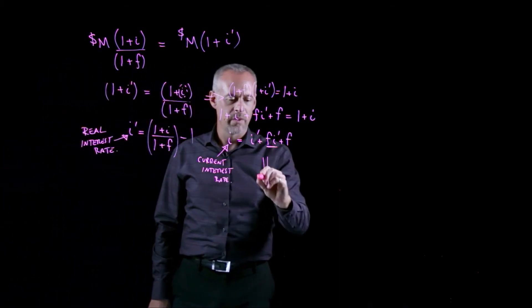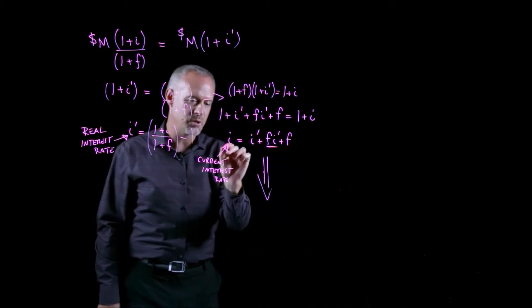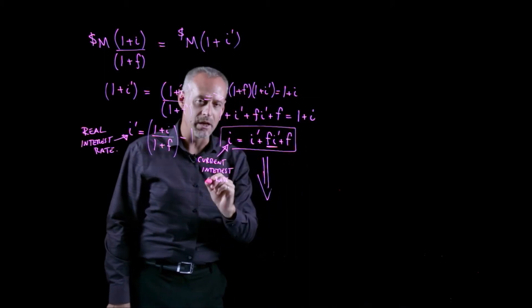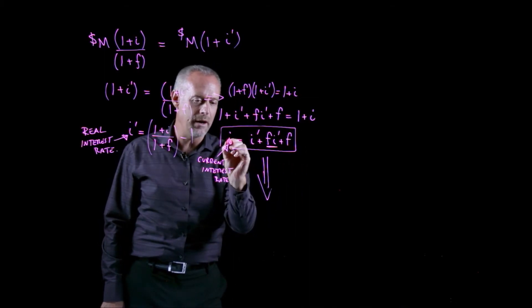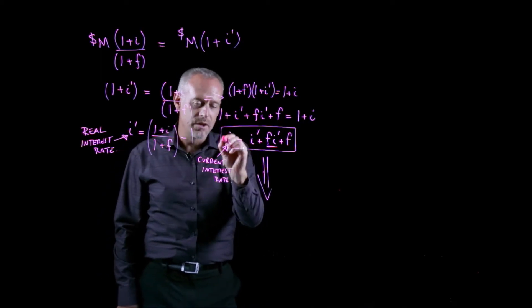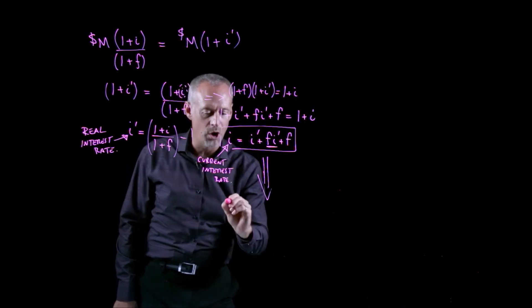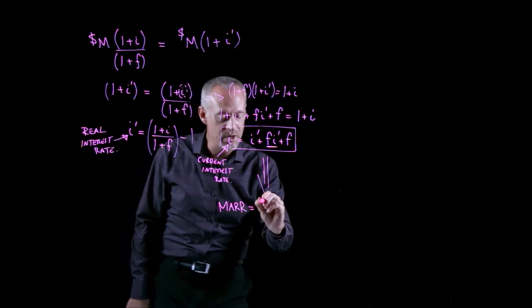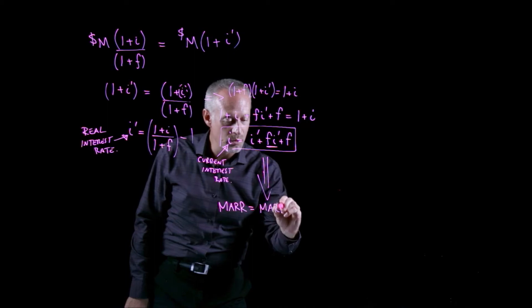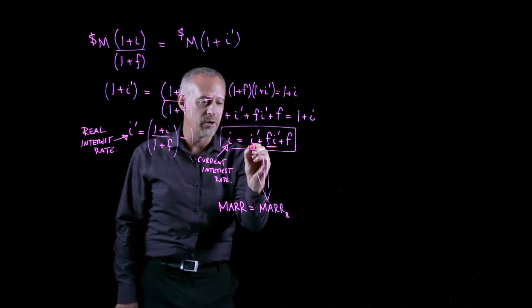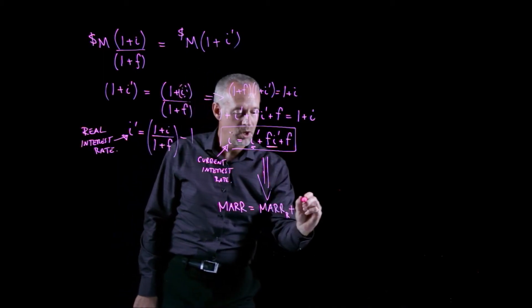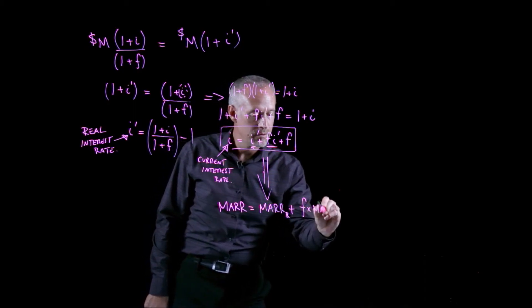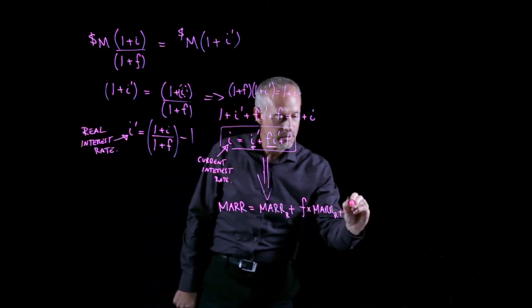Now, in this equation, the reason I write this equation like this is that I can also come back and say that if you think about this from the point of view of a company, if I think about the I as the company's MARR, where to this point in the course we've used MARR in place of I, so if I have the company's MARR, and I say the company's MARR is going to be equal to its real MARR, right? That would be analogous to this real interest rate, plus inflation plus F times the real MARR.